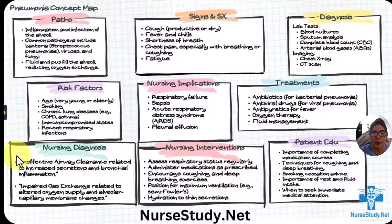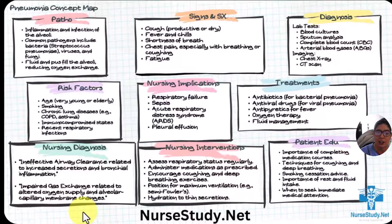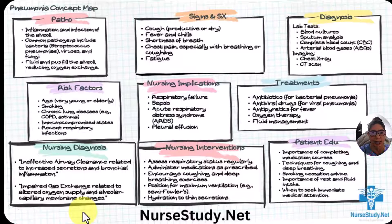Common nursing diagnoses are ineffective airway clearance related to increased secretions and bronchial inflammation, and impaired gas exchange related to altered oxygenation supply and alveolar capillary membrane changes. Those alveoli are filling with fluid, and while they are coughing it out, it is impeding that gas exchange.